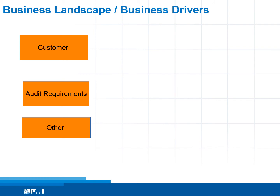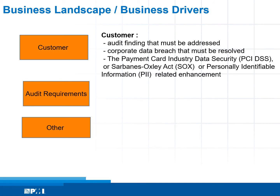Business landscape, or business drivers. For simplicity, there are three categories: customer requirements, audit requirements, and other. Customer requirements could include audit findings that must be addressed, or PCI, SOC, or PI-related information and requirements.